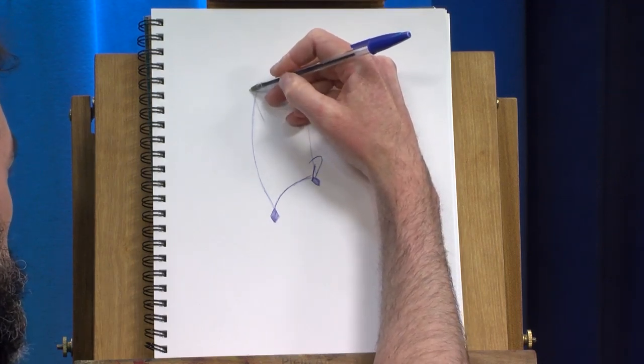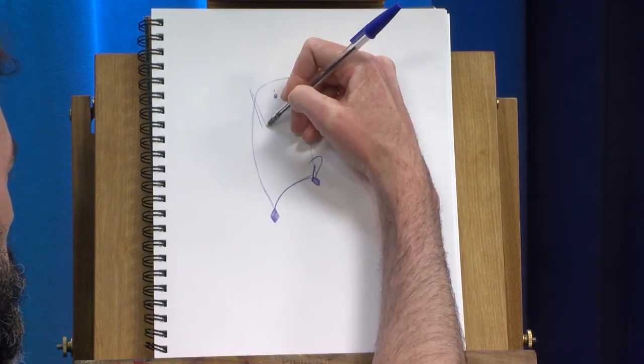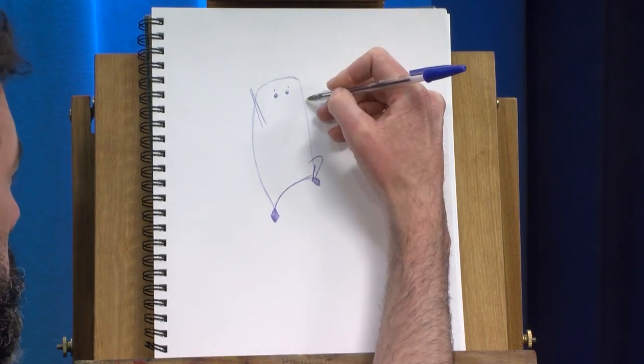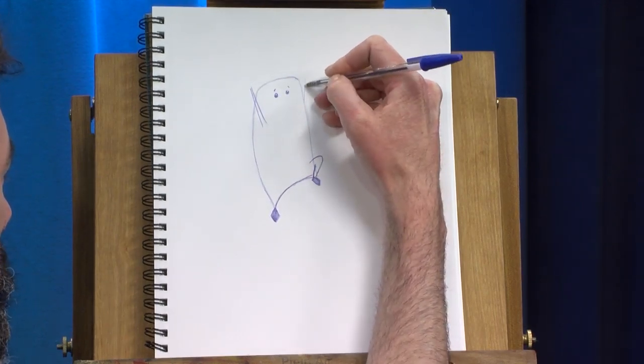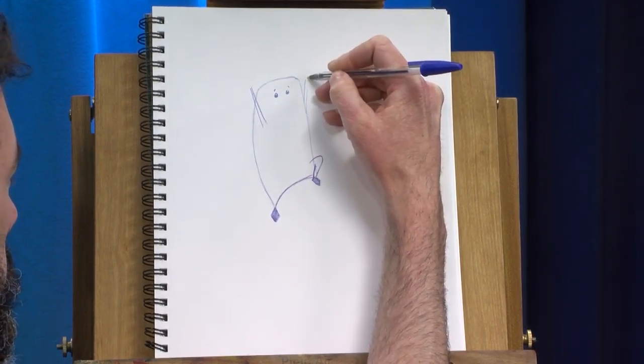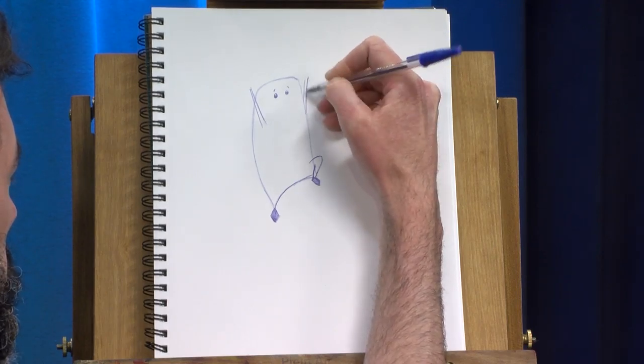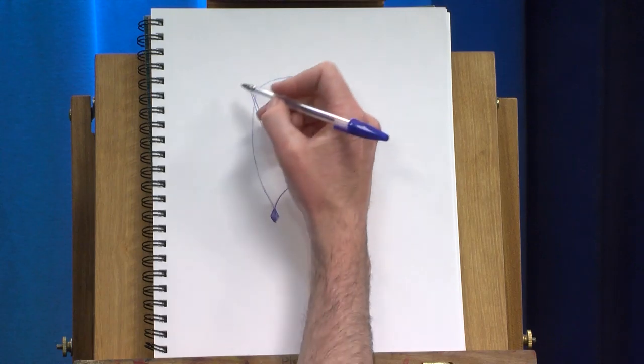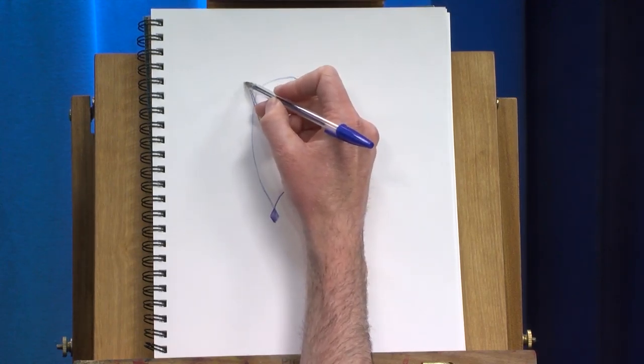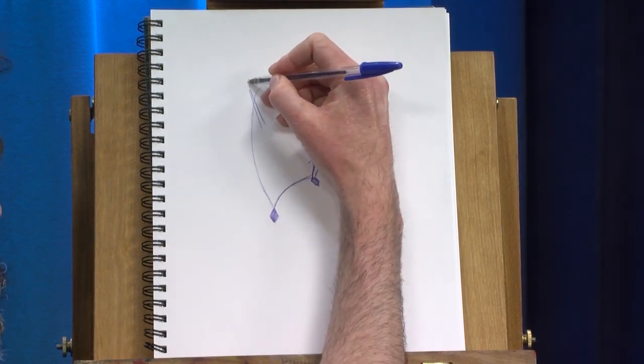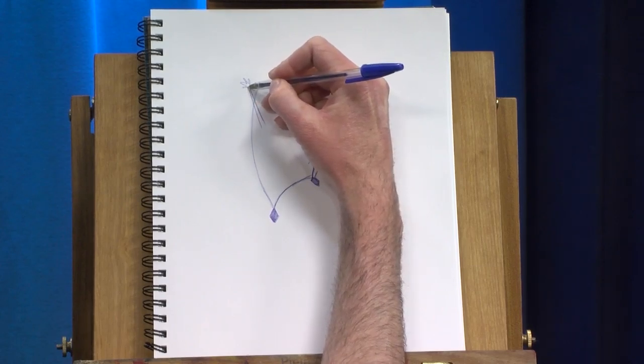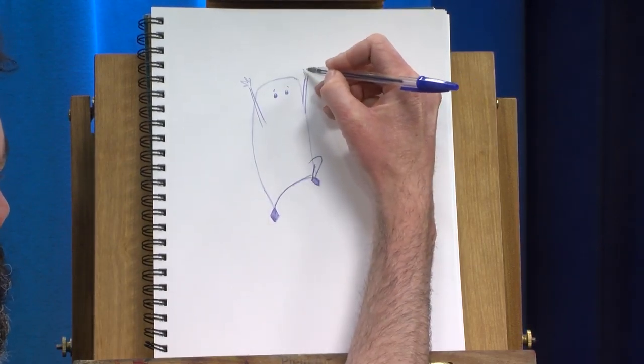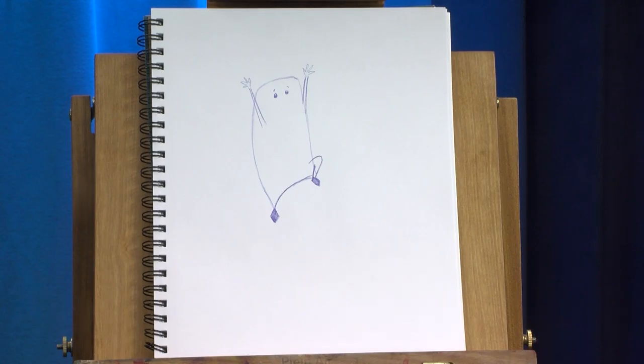Then I'm going to give him some quick spaghetti arms up towards the sky. Again, he was very excited to see that sun. And you can choose what his hands look like, whether they're kind of human-like. I'm going to make them slightly human. Like that. A couple quick little hot dog shapes for the fingers.